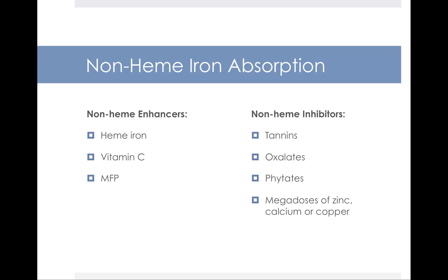The things that inhibit iron absorption are compounds like tannins, which you find in tea, oxalates and phytates, which you find in whole grains, and then megadoses of other minerals like zinc, calcium, or copper.